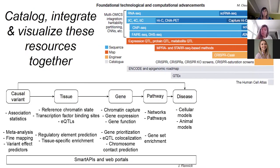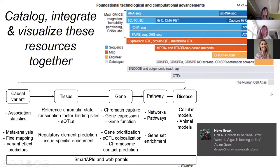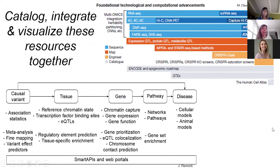Our goal initially is, because many of these datasets have come to a place where they're mature enough and there are foundational datasets available and publicly accessible in many places, just like we do with the genetics, we're going to go for the genomics and the large-scale functional resources and methods to catalog, integrate, and visualize these results together.